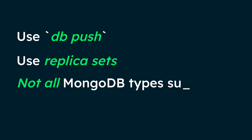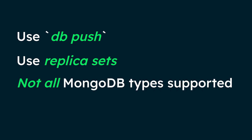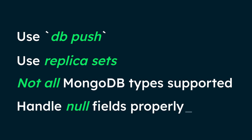Support for MongoDB's type system continues to develop — there are some MongoDB types that are not currently available in Prisma ORM. Additionally, MongoDB distinguishes between null and missing fields, which affects data modeling.